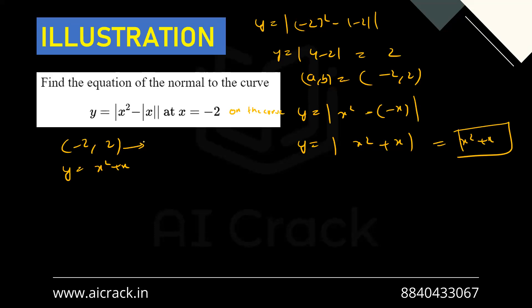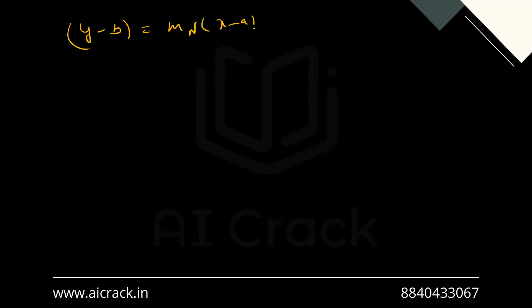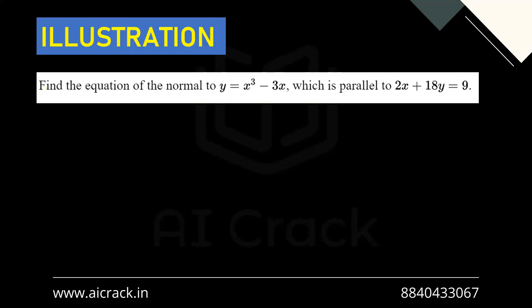We need the slope of the normal. Differentiating x² + x gives y' = 2x + 1, which is m_t. At (-2, 2): m_t = 2(-2) + 1 = -3. So m_n = -1/(-3) = 1/3. The equation of the normal is: y - 2 = (1/3)(x - (-2)), giving y - 2 = (1/3)(x + 2).